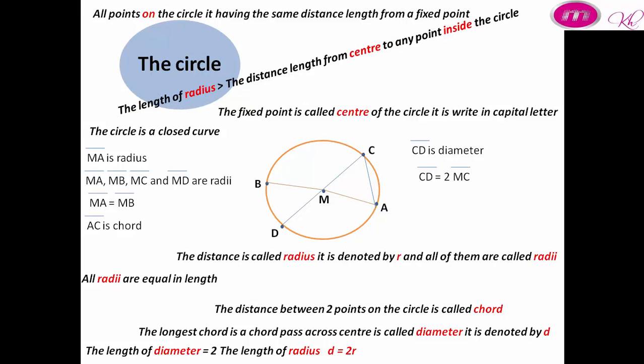The length of the radius is more than the distance from the center to any point inside the circle. MA is greater than MF.